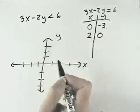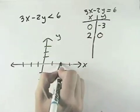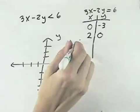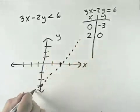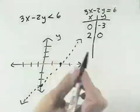And so I can use those two points as my intercepts. So I have the y-intercept of negative 3 and the x-intercept of 2. But I'll be drawing this as a dotted line because it's just less than 6, not less than or equal to. So that's kind of like my dividing line.